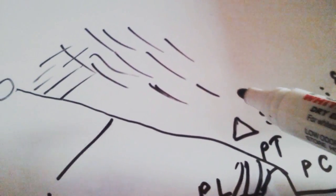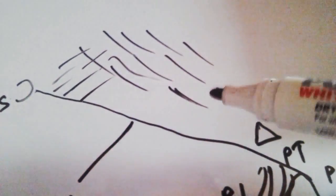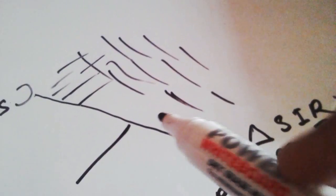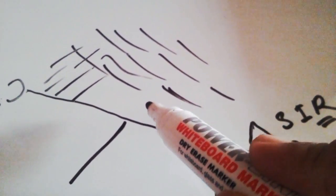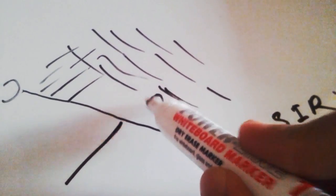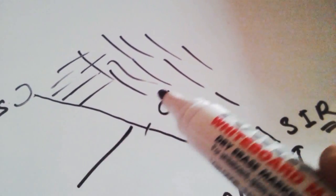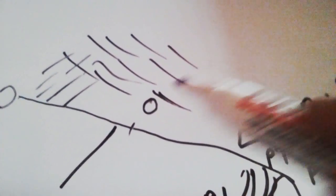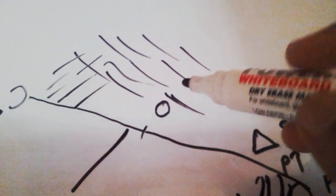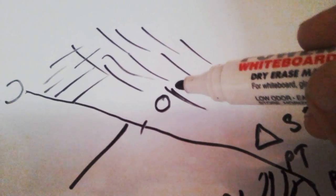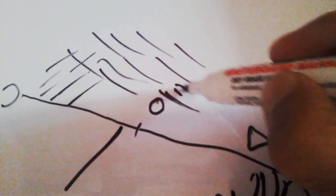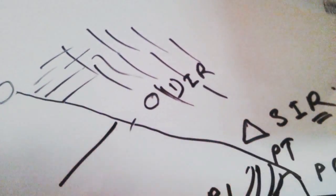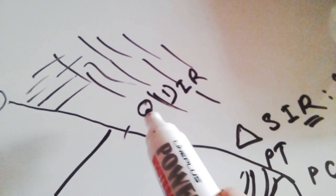At the mid-inguinal point, 1.25 cm above, there is an oval opening on the fascia transversalis. This oval opening is called the deep inguinal ring.